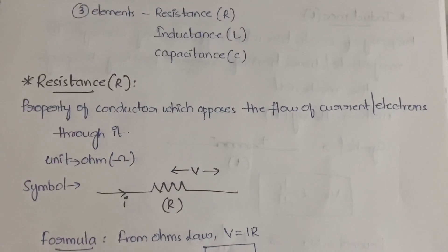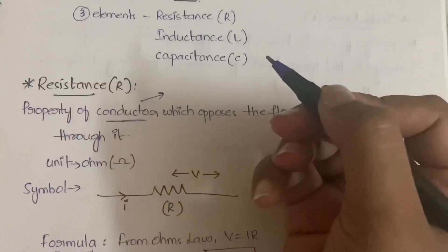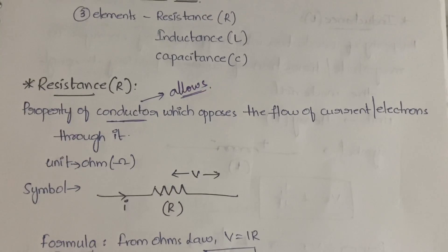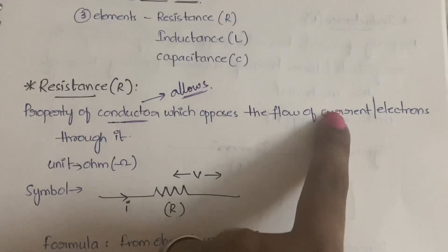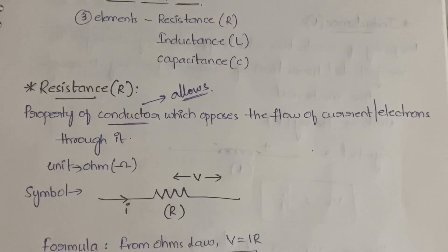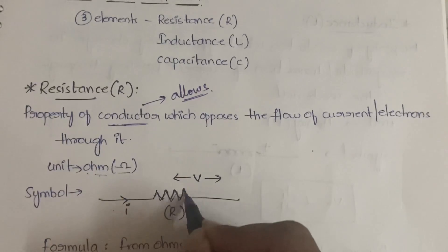Resistance is a property of a conductor. A conductor is any material that allows the passage of electricity — unlike insulators which don't allow it at all, or semiconductors which partially allow it. Resistance is the property of a conductor which opposes the flow of current or electrons through it. The unit of resistance is ohms, and the symbol looks like speed breakers.